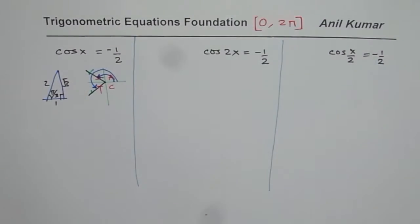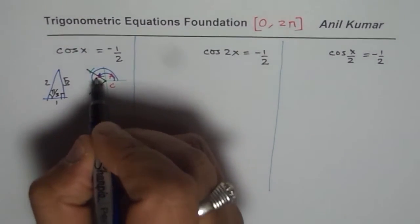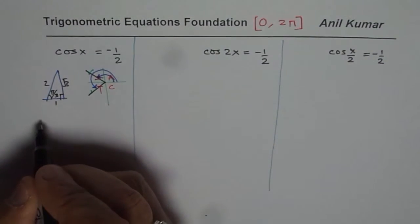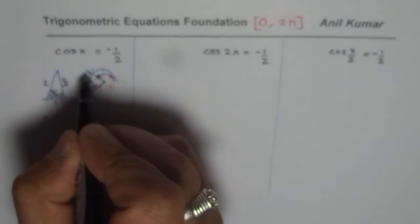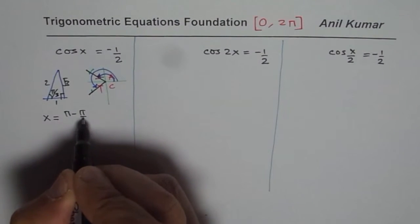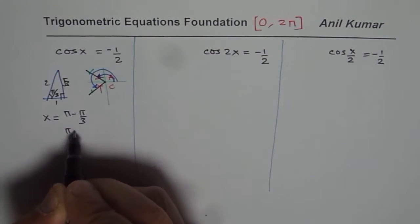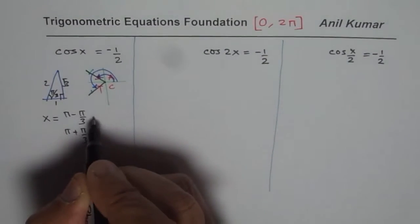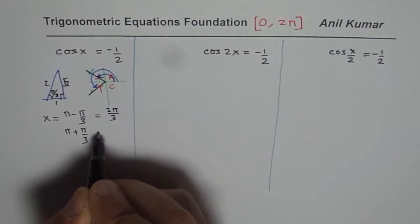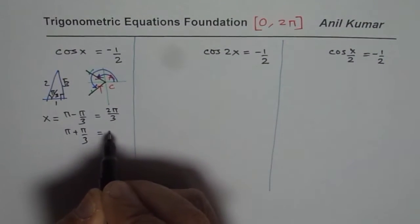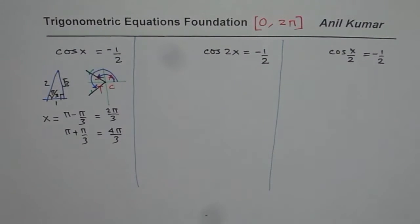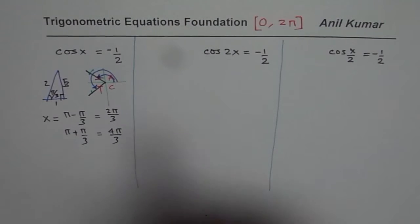Since the acute angle is π by 3, we have two solutions and these two solutions will be x equals π minus π by 3 and π plus π by 3. So it equals 2π by 3 and 4π by 3. These are the two solutions when we are talking about cos x equals minus half.